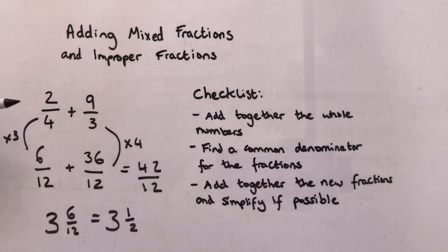So remember, from this stage you find your common denominator, you add together the totals, and then you can just change that improper fraction into a mixed fraction with a whole number and simplify if possible.